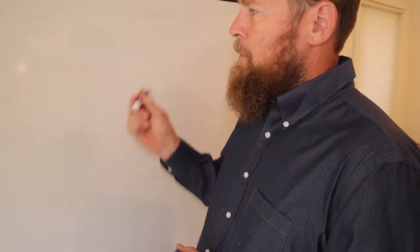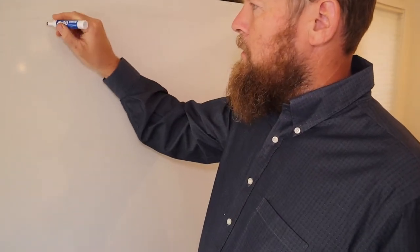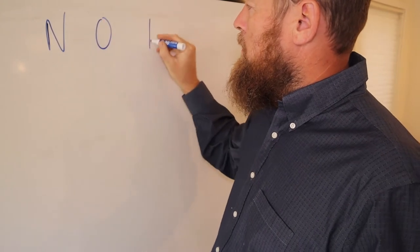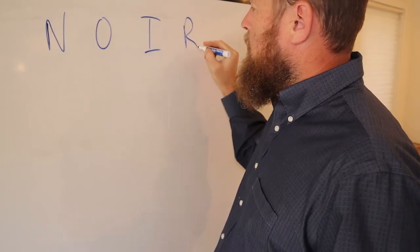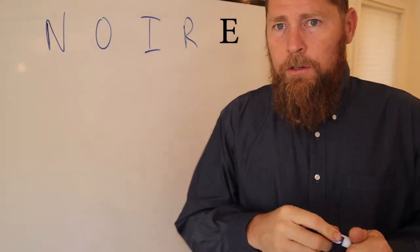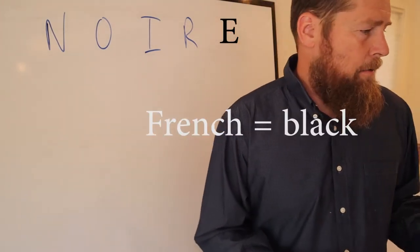Now we're going to do a brief review of measurement scales. I like the acrostic NOIR — if you speak Spanish it's 'no ir,' or 'noir' if you speak French — meaning 'do not go' or 'black.'